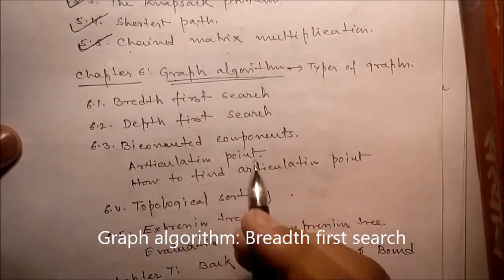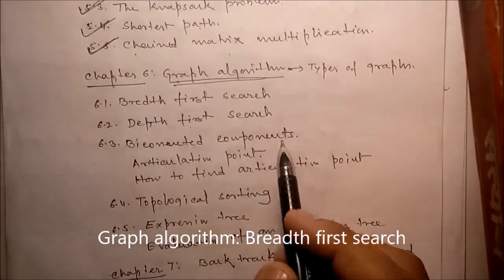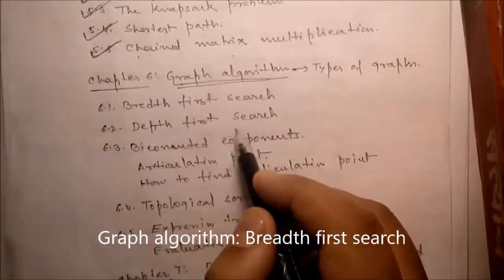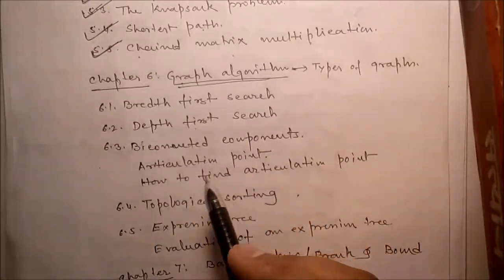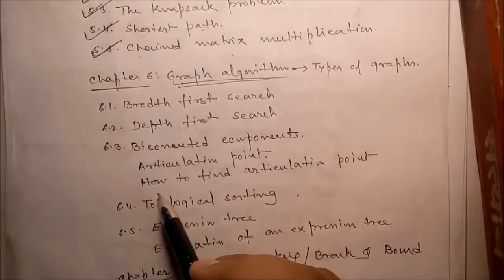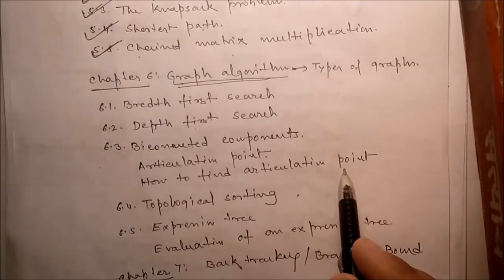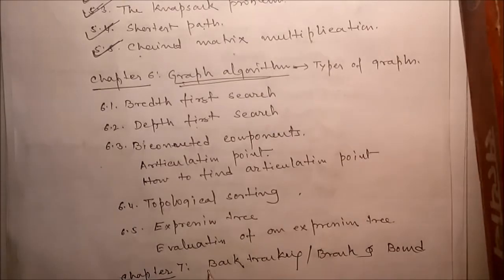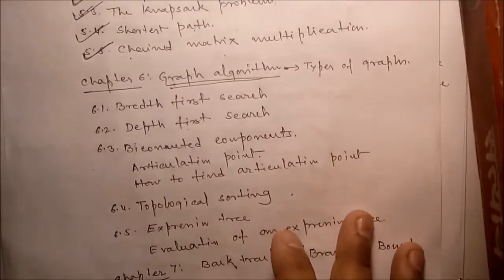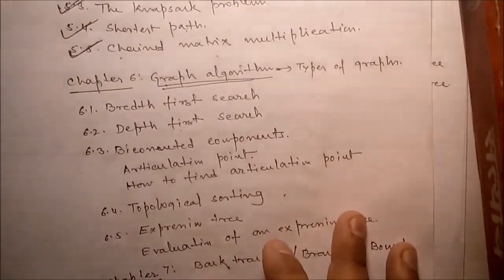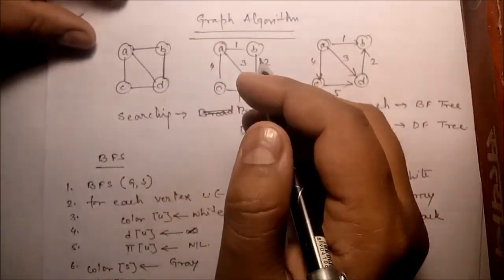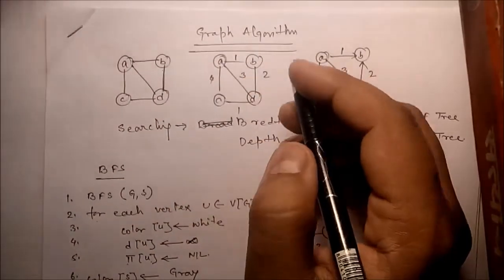Now we will talk about graph algorithms. In this chapter we will talk about breadth first search, depth first search, bi-connected components, articulation point and how to find articulation point. Next we will talk about topological sorting and expression tree evaluation.